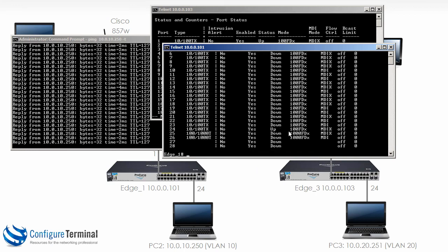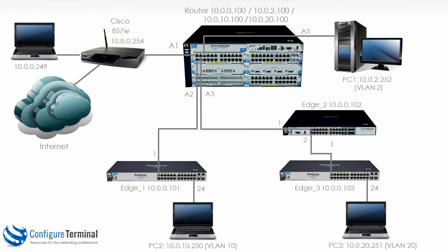The pings have started to succeed. 'Show interface brief' shows the interface is now up. I just had a dodgy cable and had to push it in properly. We have been able to move PC2 from Edge 3 to Edge 1 without changing an IP address or any configuration — the pings started to succeed once the PC was plugged in properly.